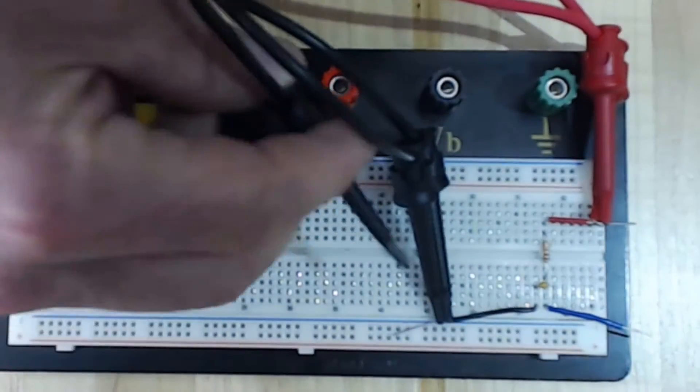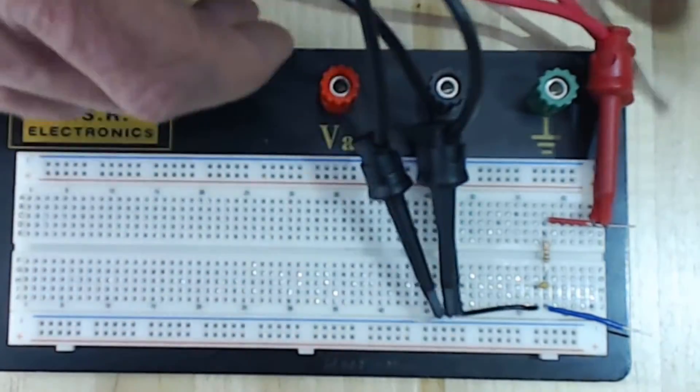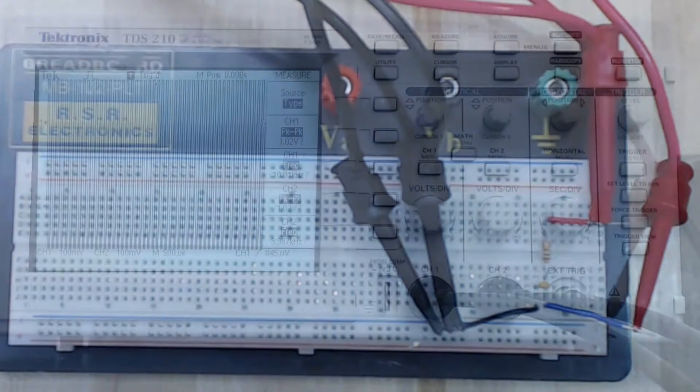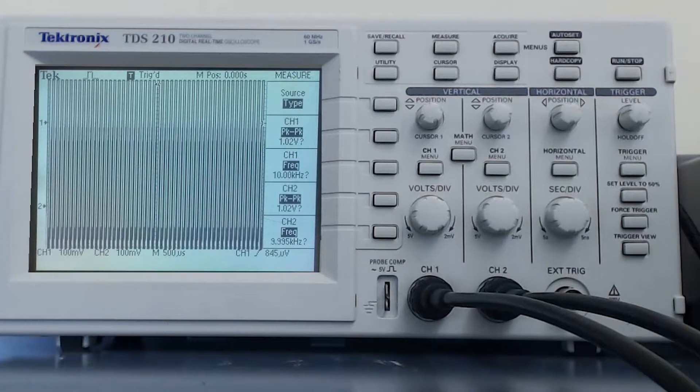Finally, I'll connect channel two of the oscilloscope across the capacitor so that we can observe the changes the circuit makes to our signal. I'll begin by adjusting the function generator to output a 10 kilohertz one volt peak to peak signal.